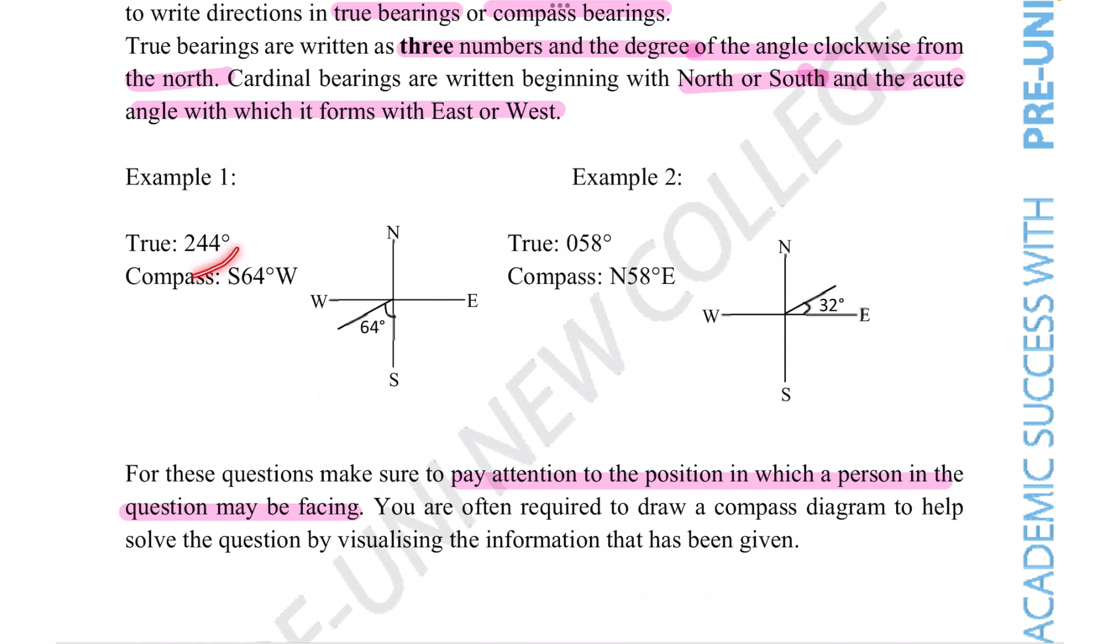So the angle 244 degrees true is in this southwesterly direction. So you start off here, this is 90 degrees, this is 90 degrees, and this is 64 degrees. So 90 plus 90 plus 64 should give us 244 degrees.